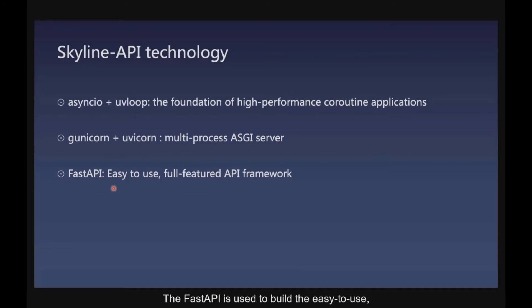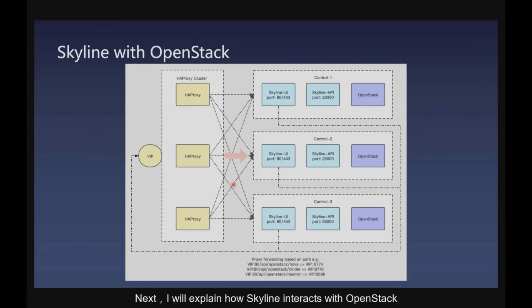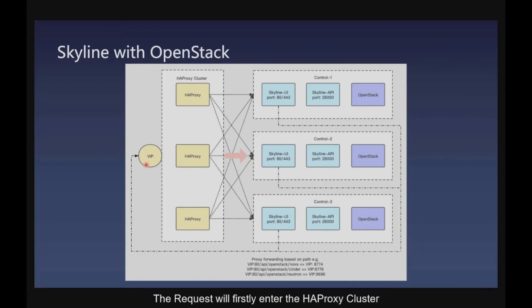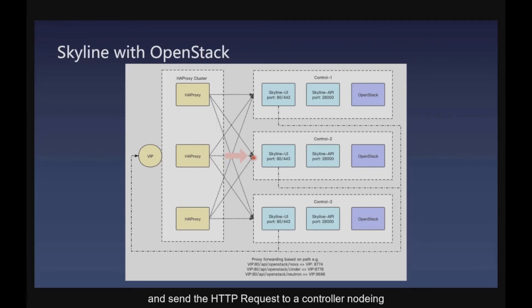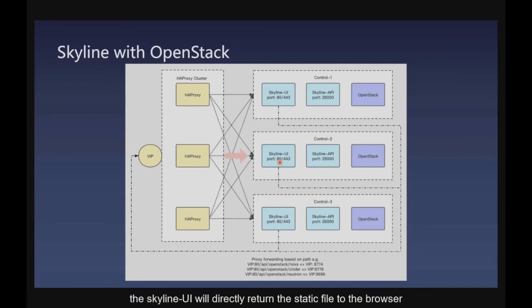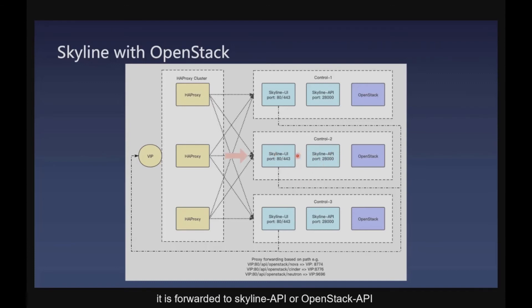Now I'll explain how Skyline interacts with OpenStack. When the browser accesses the cloud service through the VIP, the request first enters the HAProxy cluster, and one of the workers performs load balancing, sending the HTTP request to a controller node to access the Skyline UI. If the accessed content is a static file, Skyline UI will directly return the static file to the browser. But if an API service is accessed, it is forwarded to a Skyline API or OpenStack API through the Nginx proxy, and the corresponding data is returned.